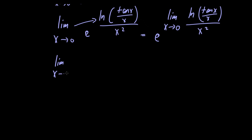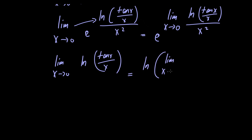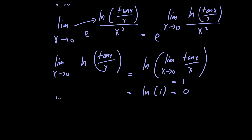Now notice that if we calculate the limit as x approaches 0 of the natural logarithm of tangent of x divided by x, we get the natural logarithm of the limit as x approaches 0 of tangent of x divided by x. That limit equals 1, so we get the natural logarithm of 1 which is 0. In the denominator, the limit as x approaches 0 of x squared is also 0. So we have a limit of the form 0 over 0.